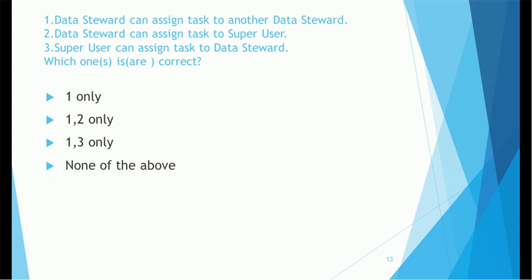Next question — three statements: (1) a data steward can assign a task to another data steward; (2) a data steward can assign a task to a super user; (3) a super user can assign a task to a data steward. Which ones are correct? Only one, only one and two, only one and three, or none of the above? The correct answer is option one and three. A data steward cannot assign a task to a super user, so statement two is incorrect.